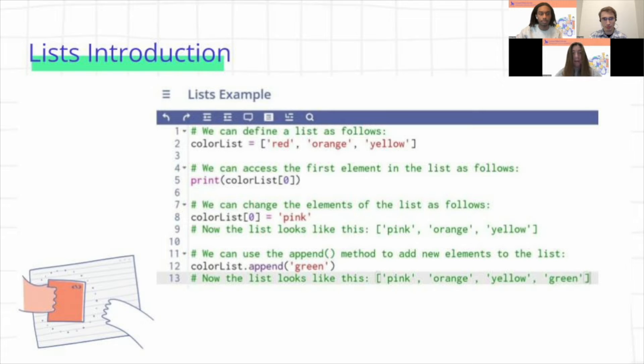Yeah, so we're going to go over some of the basics on how to make lists and edit them and make changes to them. So we can see in this slide on line two, this is an example of how we can declare a list. The color list is the name of our list and then in the square brackets are all the elements that are in this list. So we have three elements: red, orange, and yellow.